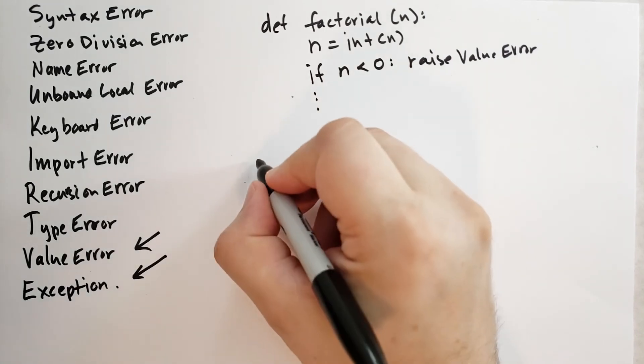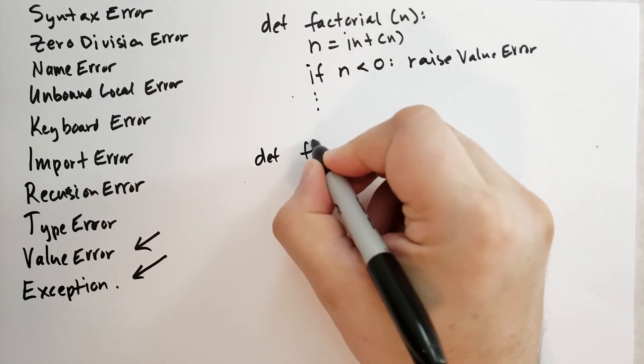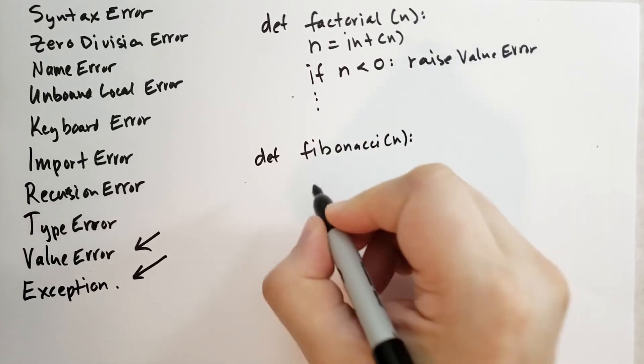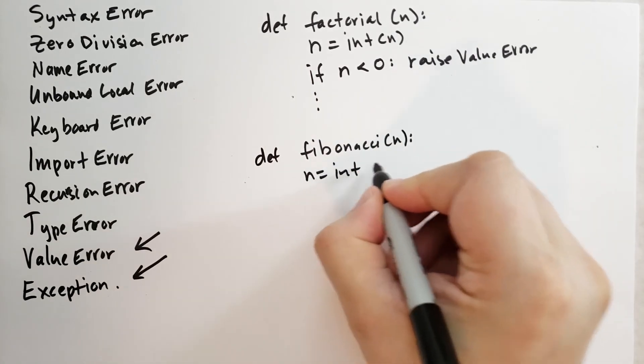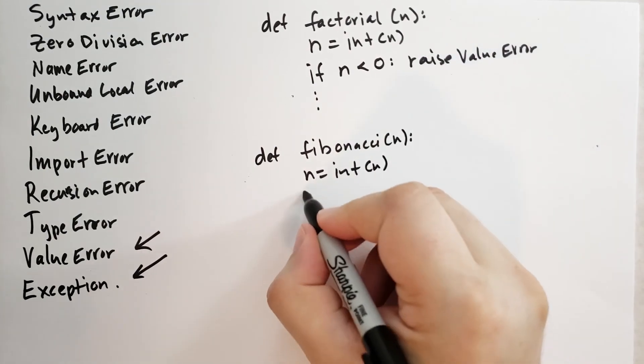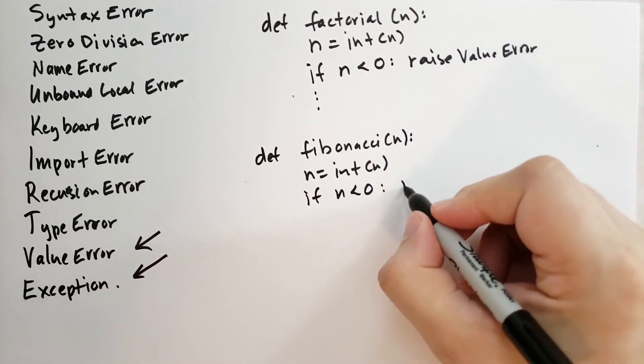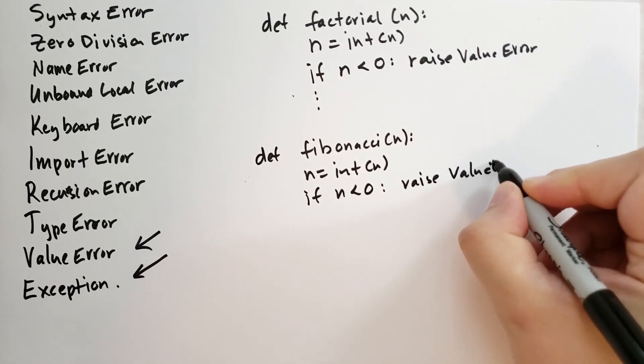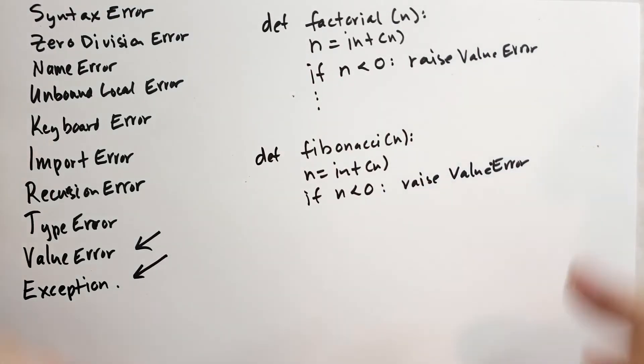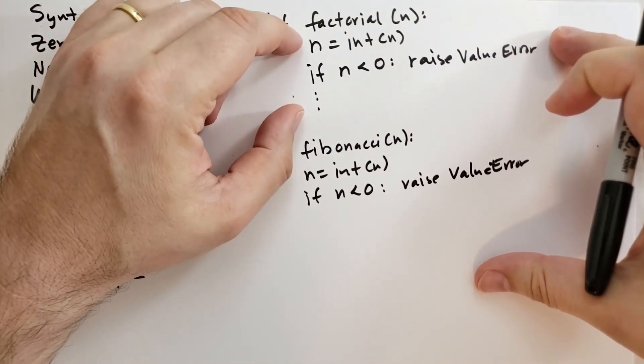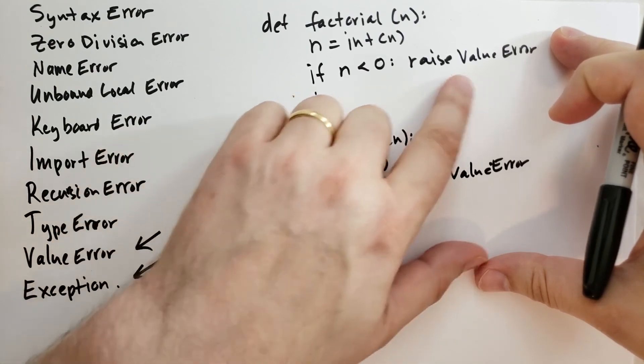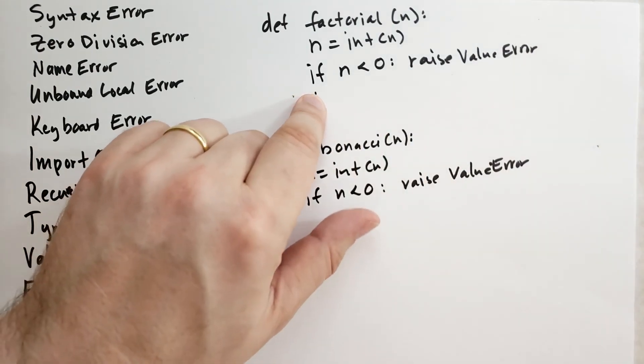We'd put the exact same code in front of Fibonacci because the same rules apply. n must be an integer. And if n is less than 0, it doesn't make any sense. Typically, when you write a function, the first few lines are devoted to converting the values to the right types and to raise exceptions if the values are values you don't like.